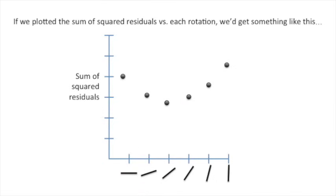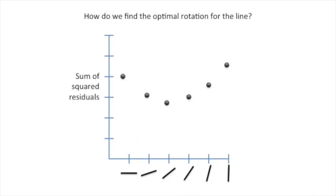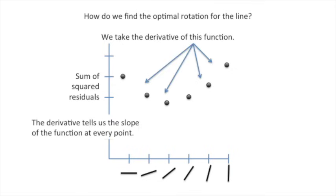Since we want the line that will give us the smallest sum of squares, this method for finding the best values for a and b is called least squares. If we plotted the sum of squared residuals versus each rotation, we'd get something like this, where on the y-axis we have the sum of squared residuals, and on the x-axis we've got each different rotation of the line. We see that the sum of squared residuals goes down when we start rotating the line, but that it's possible to rotate the line too far and the sum of squared residuals starts going back up again. How do we find the optimal rotation for the line? Well, we take the derivative of this function.